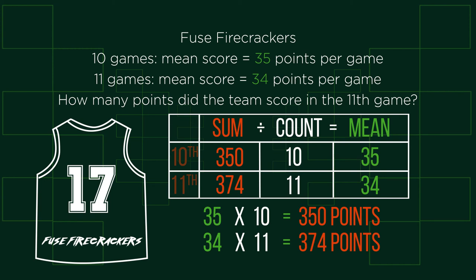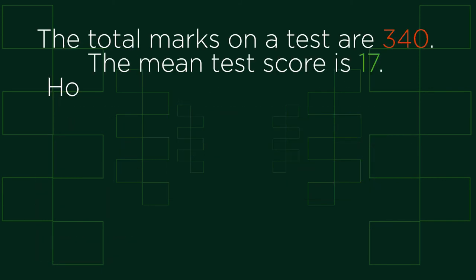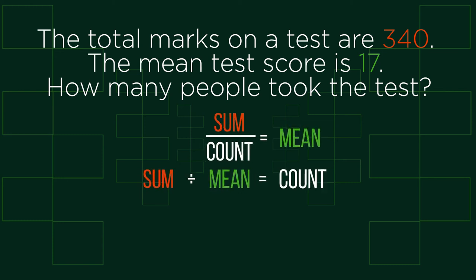So there you have a guide to finding unknown sums. This method also works for finding the number of people — the count. To do so, we use the sum value and mean, and divide the sum by the mean in place of the count, like you can see here. By switching the mean and the count, a simple division lets us find the missing value.